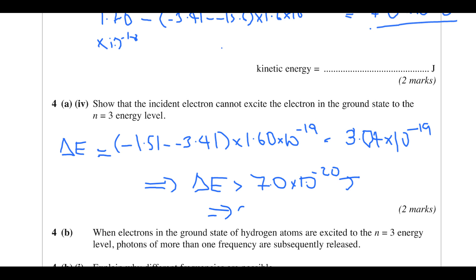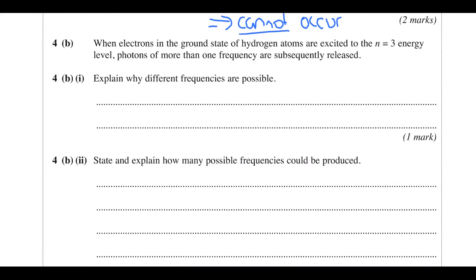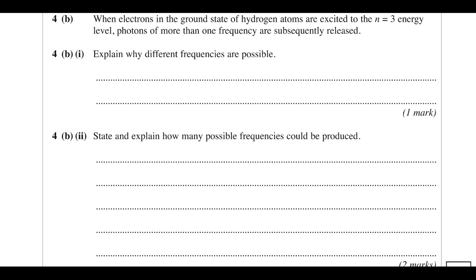You could also have shown the energy to go from ground state to n = 3 directly and compared to the original electron energy. When electrons in the ground state of hydrogen atoms are excited to n = 3, photons of more than one frequency are subsequently released. The key thing is the electrons take different routes back to ground state, which have different changes in energy, emitting different energy photons.